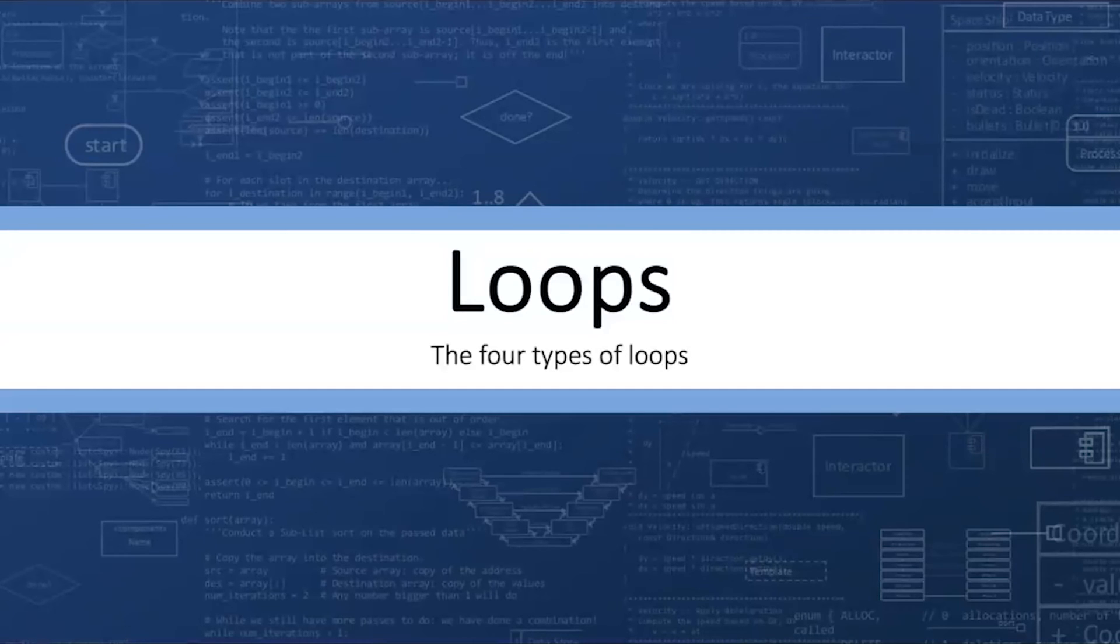Today's video will explain the different types of loops. Hello, I'm James Helfrich. There are four main types of loops: an event control loop, a counter control loop, a sentinel control loop, and a collection control loop. This video will explain the four types of loops as well as the different variations.